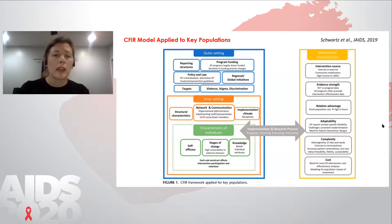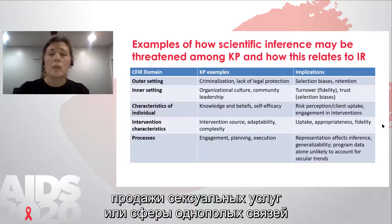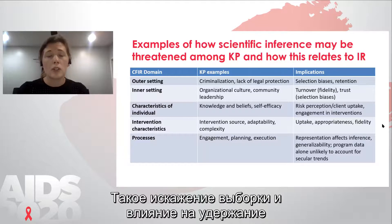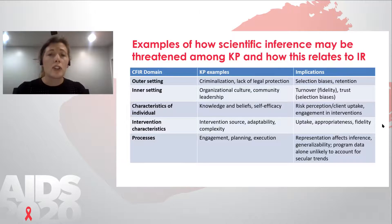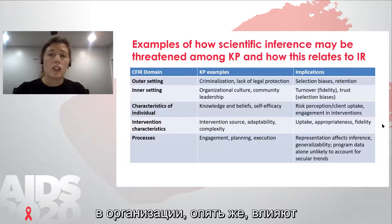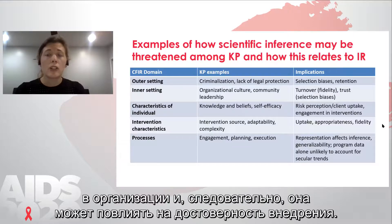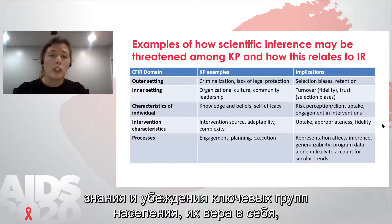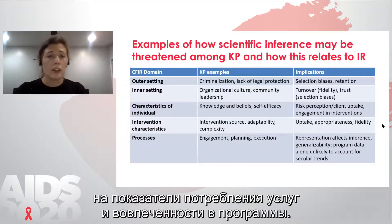I'll pull out a few examples to make it a bit more specific. In the outer setting, criminalization of sex work activities or same-sex behaviors may impact who ends up participating in a service or research study. Those selection biases or impacts on retention may ultimately affect the results and your understanding of the results. In terms of the inner setting, organizational culture of the implementing partner, community representation from key populations and their leadership in the organization will have implications for selection biases based on trust, but also organizational culture will affect turnover and potentially the fidelity of implementation. In terms of characteristics of individuals, knowledge and beliefs of the key populations and their self-efficacy to promote or achieve a certain change will have implications for uptake of services and engagement in interventions.